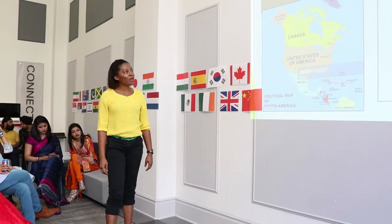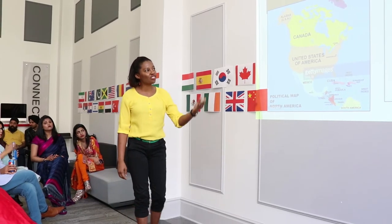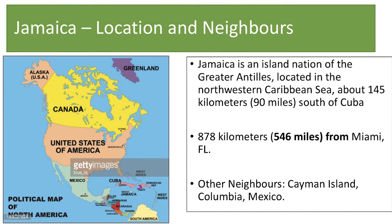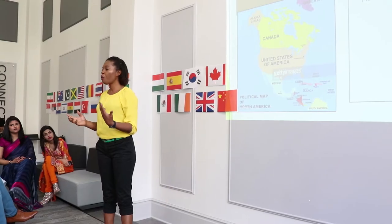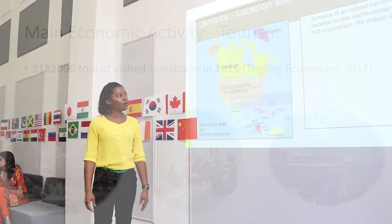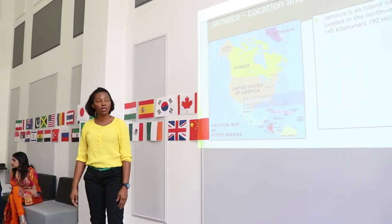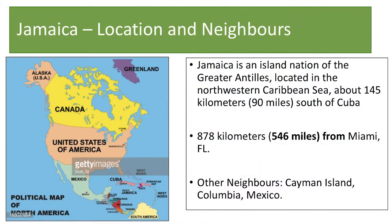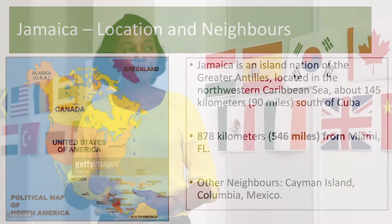Jamaica is an island nation of the Greater Antilles — one of the larger islands in the Caribbean. It's located in the north-western region of the Caribbean, about 145 kilometers, or 90 miles, south of Cuba. So yes, we're neighbors with Cuba. It's also 878 kilometers from Miami, Florida. Other neighbors include Mexico, Cayman Islands, and Colombia.